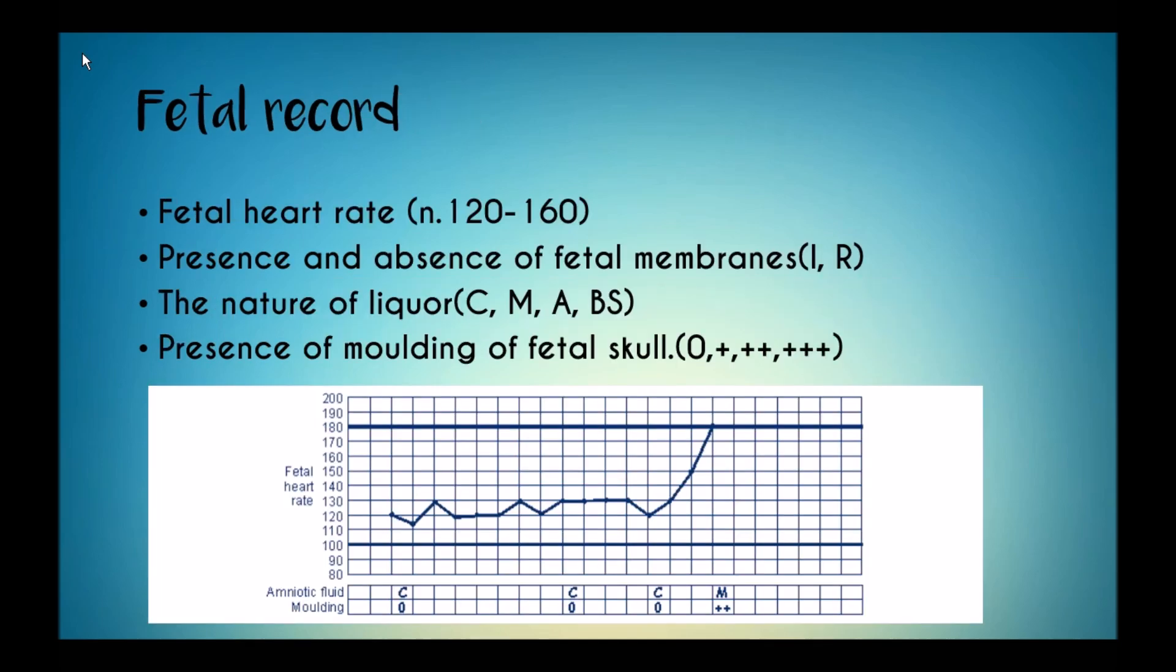The fetal record contains fetal heart rate, normally between 120 to 160 per minute. Fetal membranes are recorded as I for intact and R for ruptured. The nature of liquor is recorded as C for clear, M for meconium stained, A for absent, and BS for blood stained.